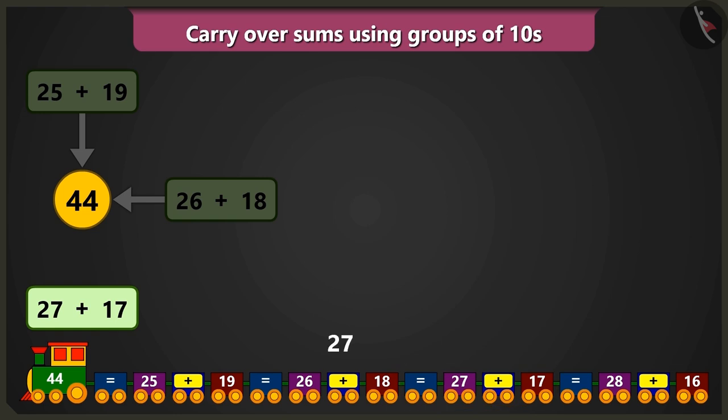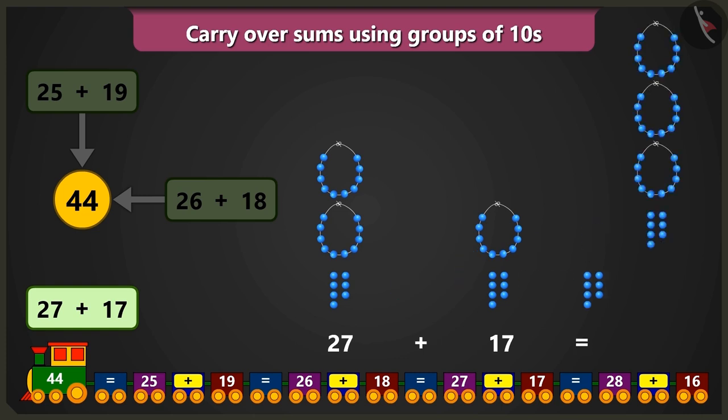Let us take 27, that is 2 tens and 7 ones, and add 17, that is 1 ten and 7 ones. 7 ones added to 7 ones equals 14, which means 1 ten and 4 ones. So here also, adding 4 tens and 4 ones results in 44.